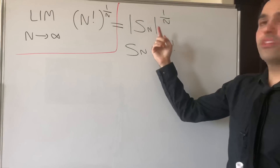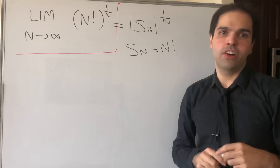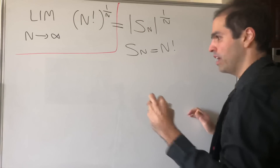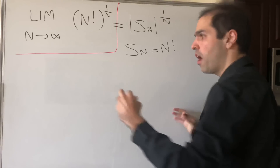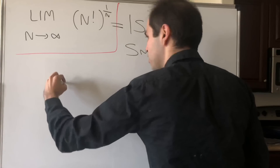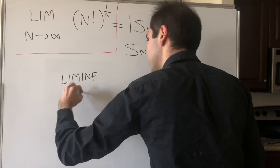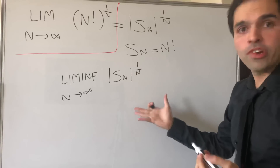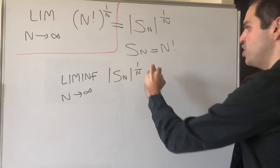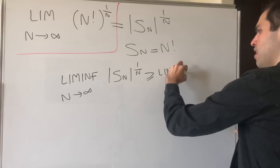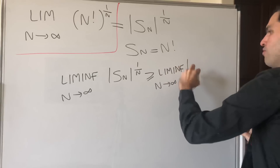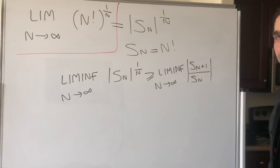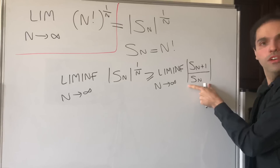This nth root of a sequence should remind you of the root test, and in fact there's an inequality that's very useful here. This is what I like to call the pre-ratio test, which simply says the following: if you take the limit as n goes to infinity of the nth root of S_n, it's still better than taking the limit of the ratio term. So this is greater than or equal to the limit as n goes to infinity of the ratio of successive terms, S_{n+1} over S_n.